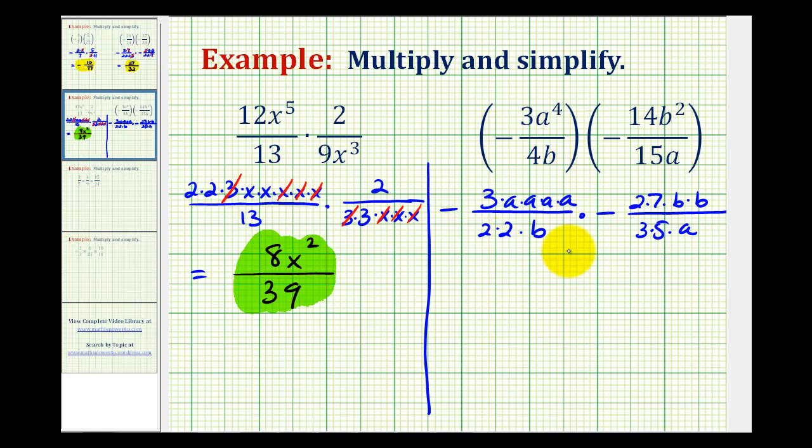And now we're going to simplify before we multiply. Here we have three over three, which simplifies to one. And we also have two over two, that simplifies to one. And now let's look at our variables. We have a common factor of a here and here. We also have a common factor of b here and here.